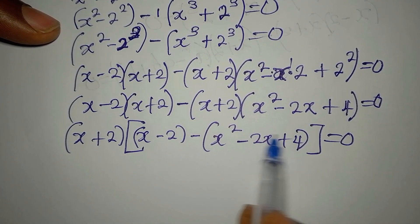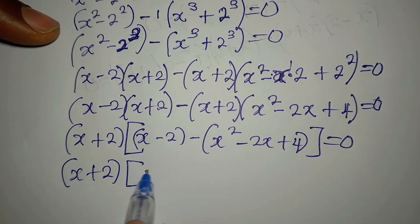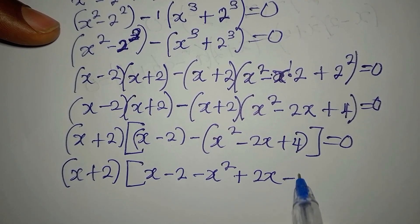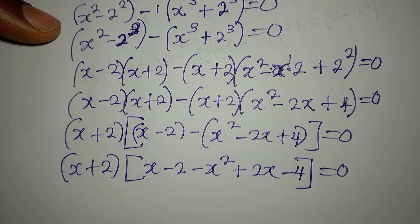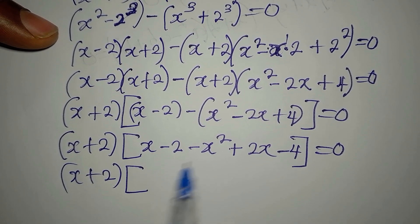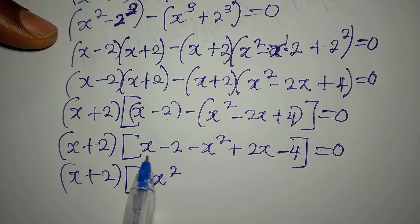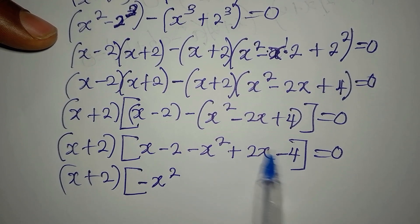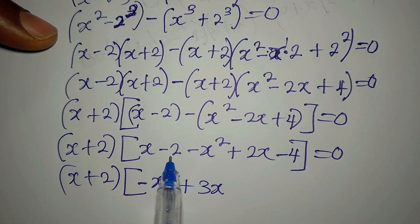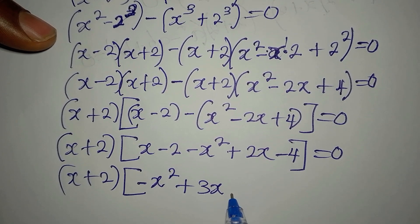The next step is to open the brackets. x plus 2, and now opening the inner bracket we get x minus 2 minus x squared plus 2x minus 4, equals 0. Collecting terms inside: minus x squared, then x plus 2x gives plus 3x, then minus 2 minus 4 gives minus 6.